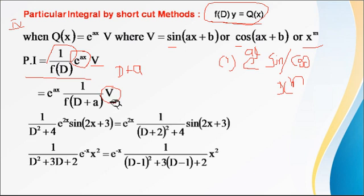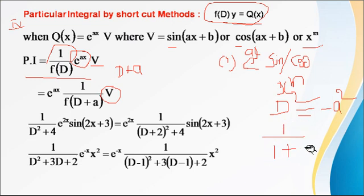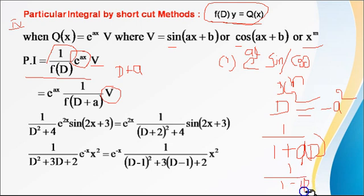The second method applies to sin or cos, where we replace D² with −a². For x^m, we convert into the form 1/(1 + φ(D)) or 1/(1 − φ(D)), and continue with either the second or third method.